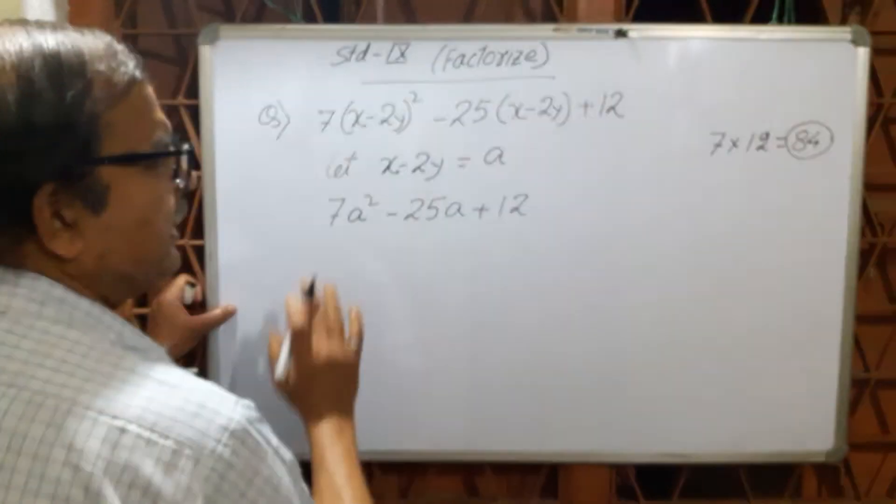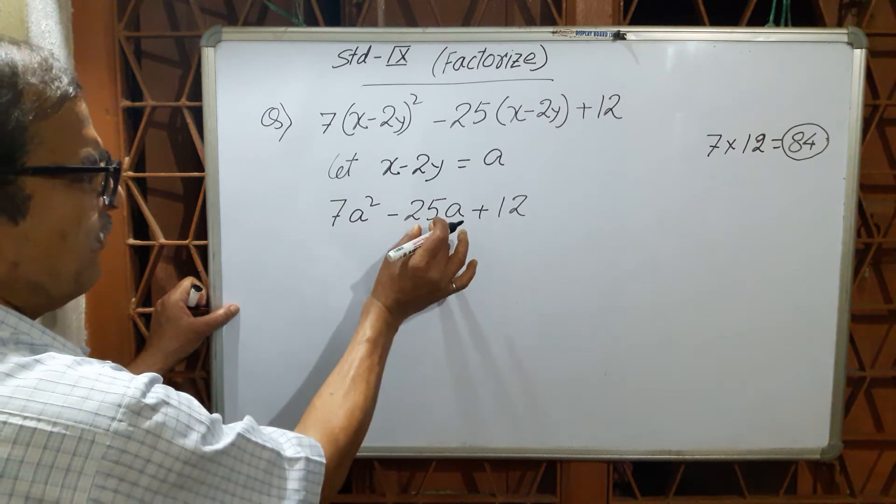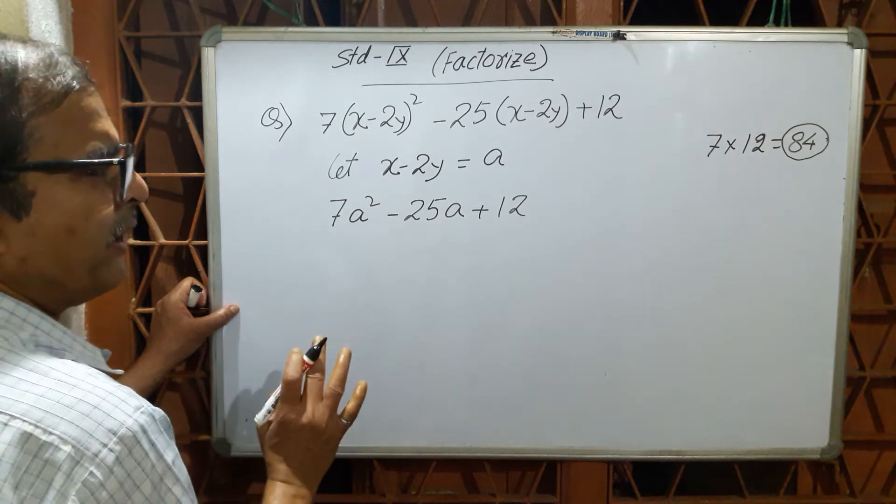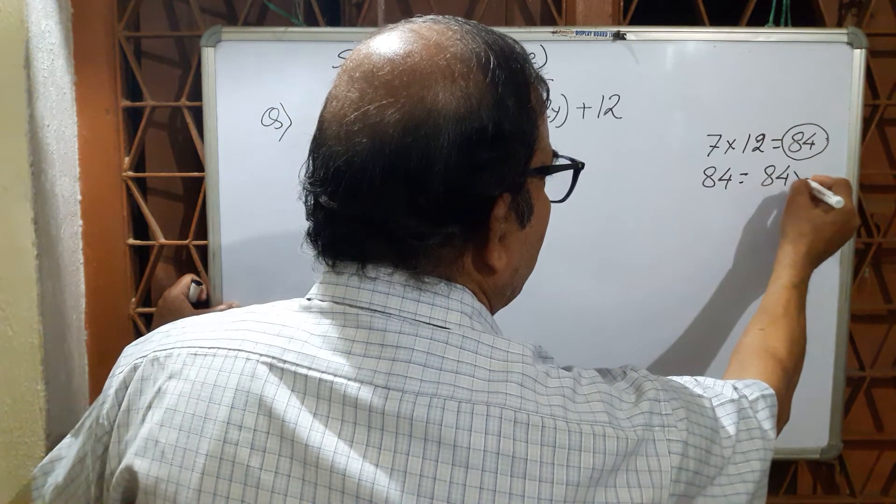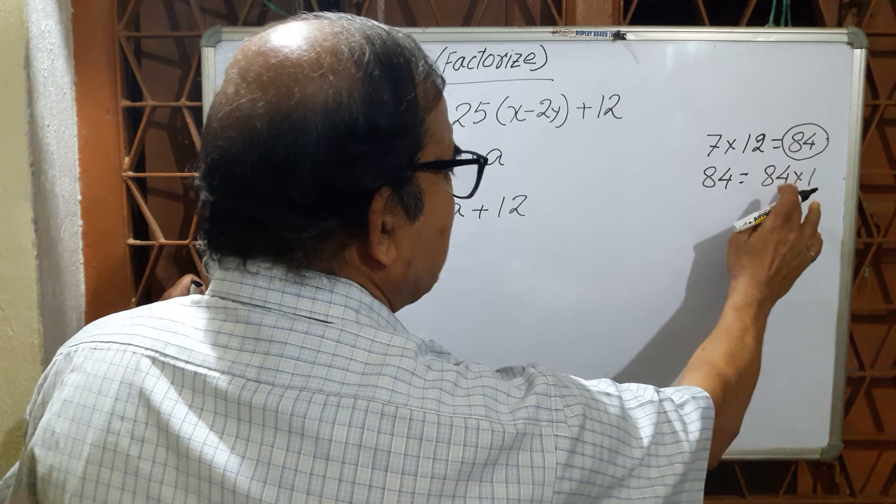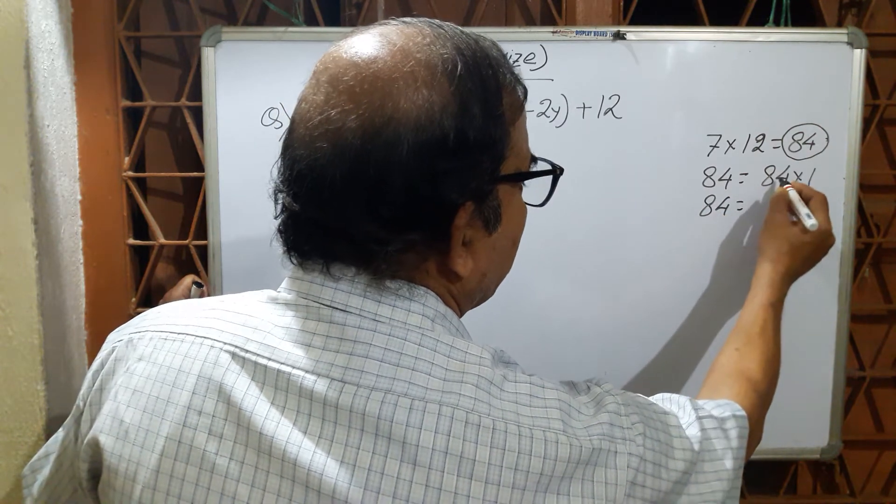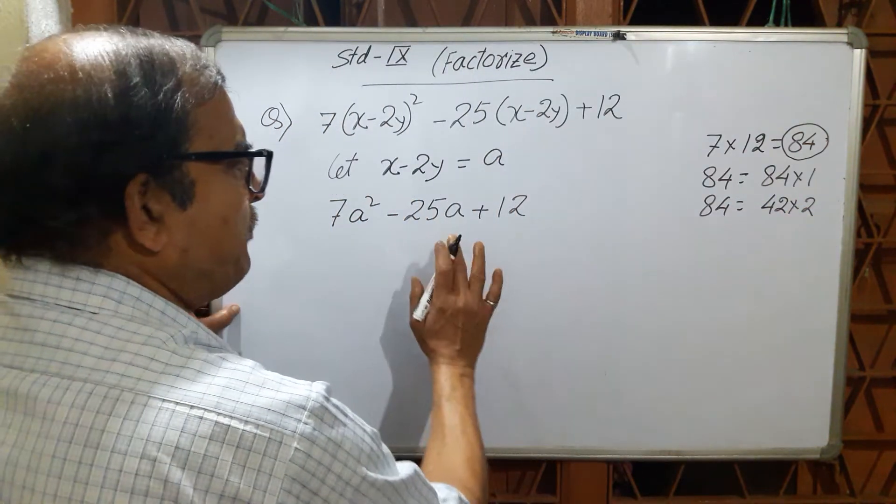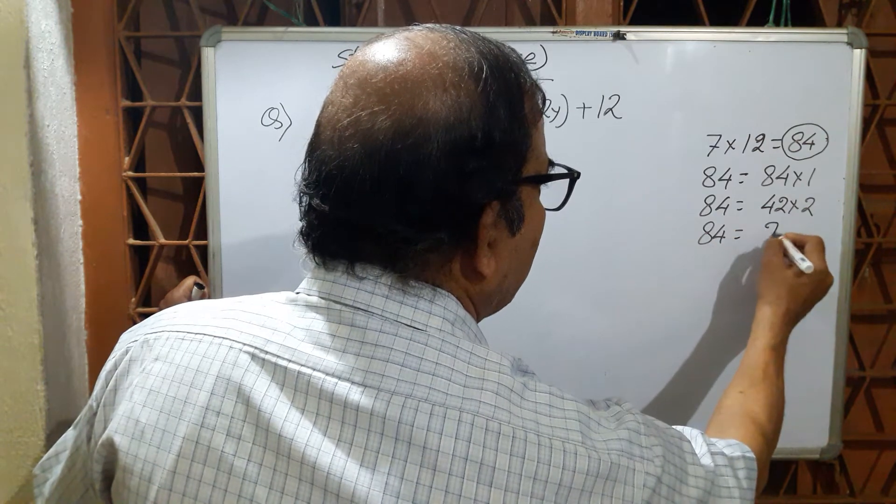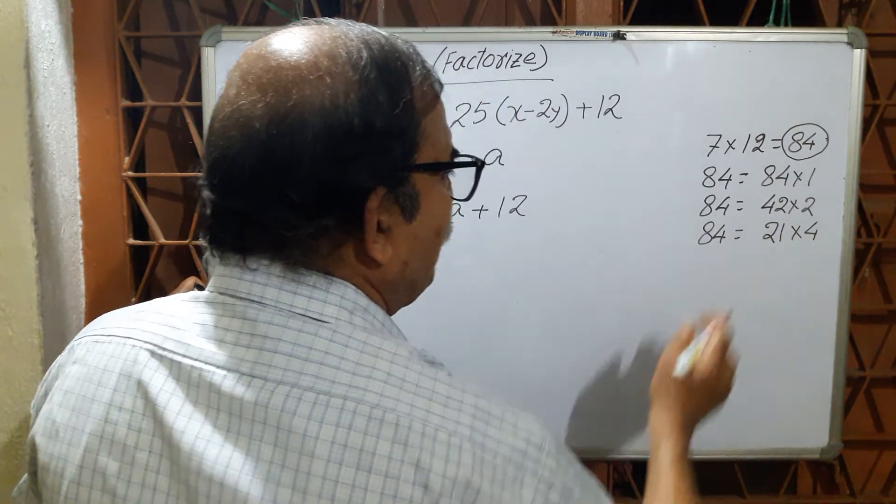84 you have to break it in such a way that will match this in plus and minus. One thing you'll see: here is minus, here is plus. So the break will have both minus signs. So how is this for 84? You can do 84 × 1, which is not matching plus or minus. Then you can try 42 into 2. Plus minus, not 25. Then 84 into half: 21 and 21 into 4. This is the matching: 21 plus 4 is equal to 25.